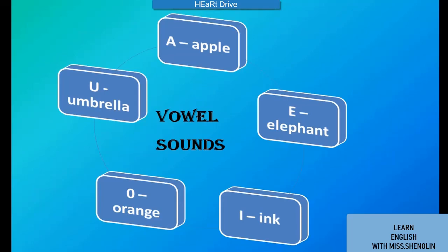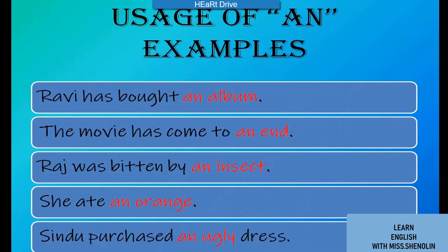The vowel sounds are: a, e, i, o, u. Let us see some examples for the article 'an.' 'Ravi has bought an album' — 'album' starts with 'a,' a vowel sound, so we have used 'an' before it. 'The movie has come to an end.'